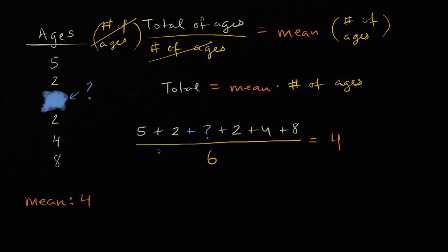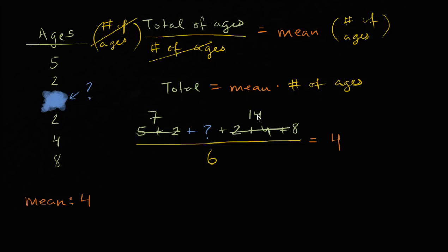Let's simplify this. Five plus two is seven. Two plus four is six, plus eight is fourteen. And seven plus fourteen is twenty-one. So we're left with twenty-one plus question mark, over six, is equal to four.